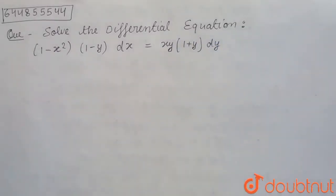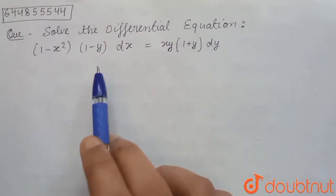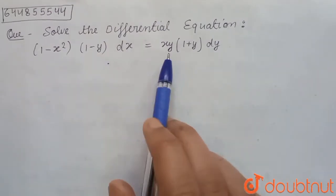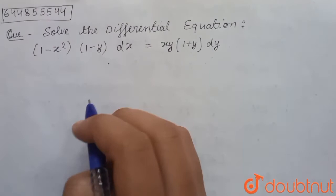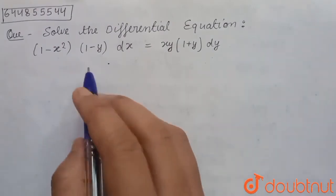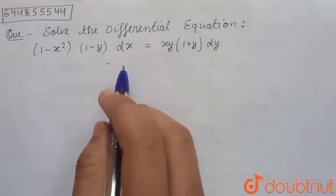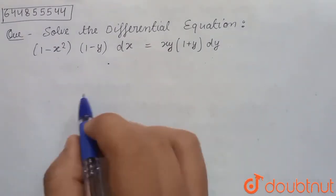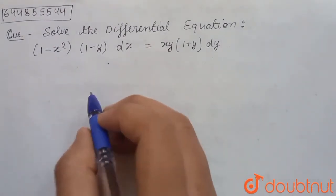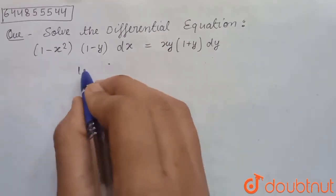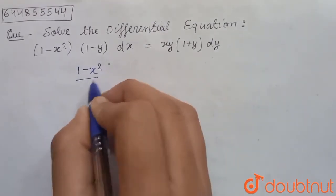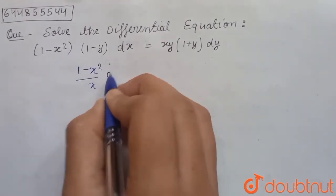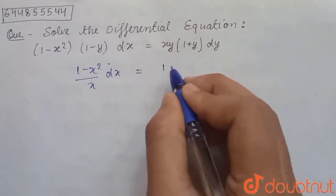The question is: solve the differential equation (1 - x²)(1 - y) dx = xy(1 + y) dy. We can use the variable separable method. We can write this as (1 - x²) / x dx equals y(1 + y) / (1 - y) dy.